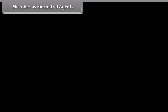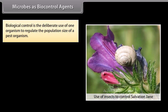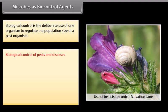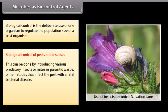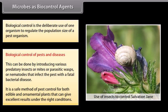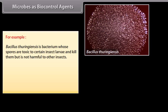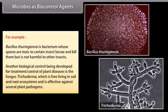Microbes as biocontrol agents. Biological control is the deliberate use of one organism to regulate the population size of a pest organism. This can be done by introducing predatory insects, mites, parasitic wasps, or nematodes that infect the pest with a fatal bacterial disease. It is a safe method of pest control for both edible and ornamental plants. For example, Bacillus thuringiensis is a bacterium whose spores are toxic to certain insect larvae and kill them, but is not harmful to other insects. Another biological control being developed is the fungus Trichoderma, which is free-living in soil and root ecosystems and is effective against several plant pathogens.